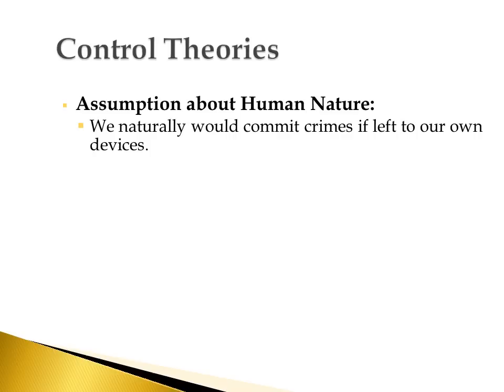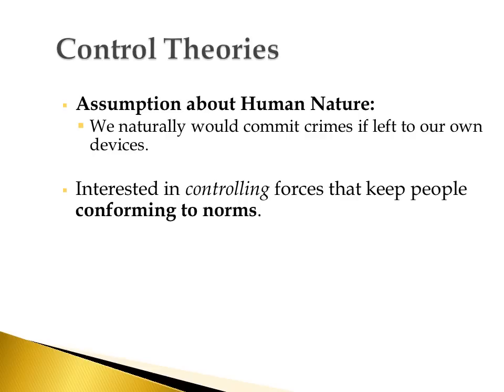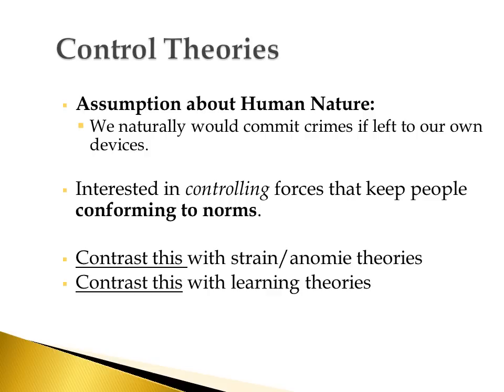As humans, according to control theory, we are self-seeking, self-serving, hedonistic creatures. The assumption is that in the absence of things like societal controls, laws, and norms, you're going to do whatever you need to do to get what you want, and oftentimes that would mean committing crime. So in control theory, the interest is: what are the controlling forces that keep most people conforming to norms? Most people don't commit a lot of serious crime on a daily basis, and the interest is in what keeps so many people from committing crime and what causes and allows other people to be free of those norms.